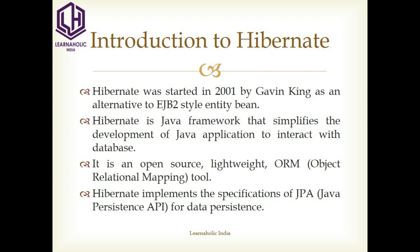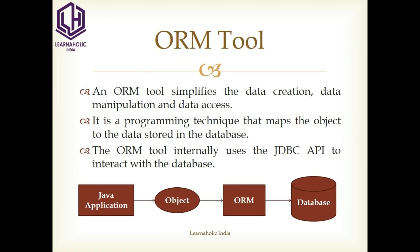Hibernate implements the specification of JPA. JPA is Java Persistence API for data persistence. This is the object relational mapping tool, or ORM tool. An ORM tool simplifies the data creation, data manipulation, and data access.